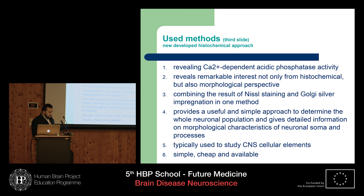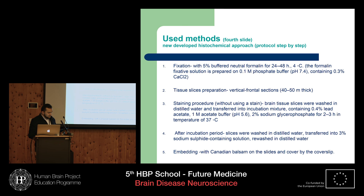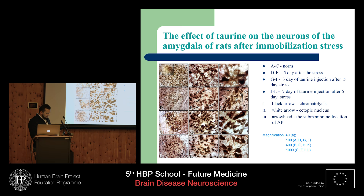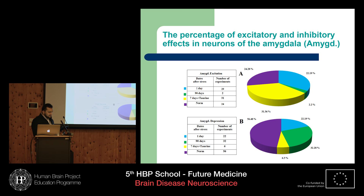Here we can see the advantages of the histochemical method. There are many, but I think the important one is that it's simple, cheap, and available. Here we can find complete information about the method like a protocol. Those are the histochemical results of the experiment where we can see the neuroprotective effects of towering, in these and these lines. Those are the results after extracellular electrophysiology.